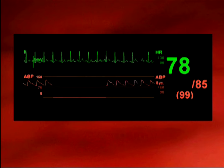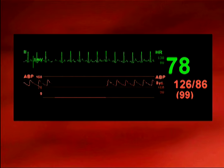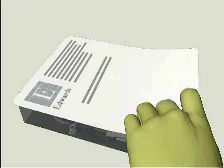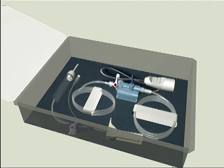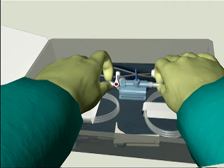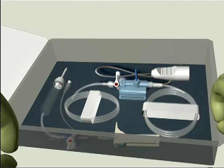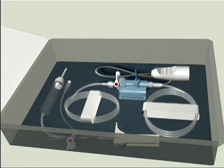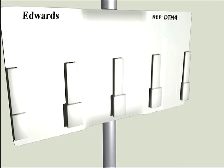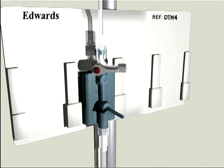Prepare the TruWave transducer using the following six steps. Step one: using aseptic technique, remove the transducer kit from the sterile packaging and ensure all connections are secure. Step two: insert the TruWave transducer into a mounting backplate that is secured on an IV pole.